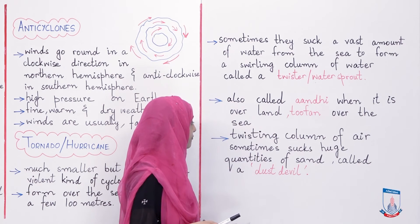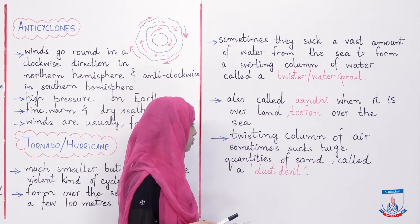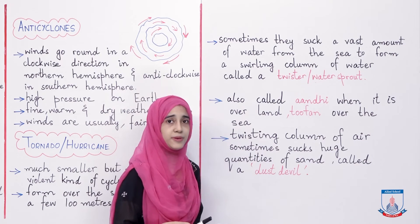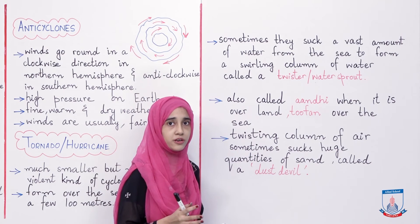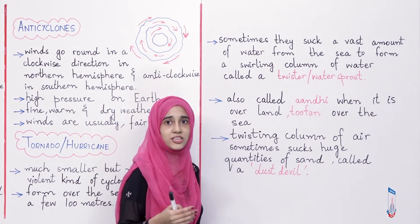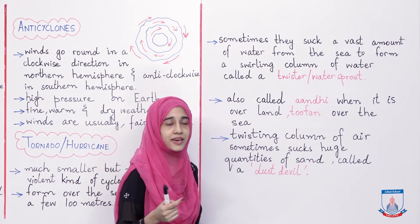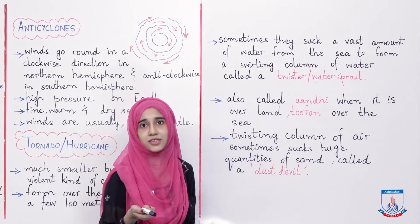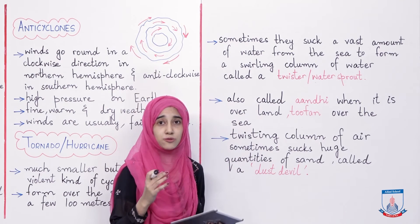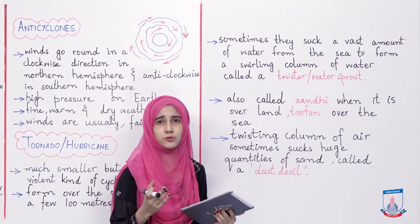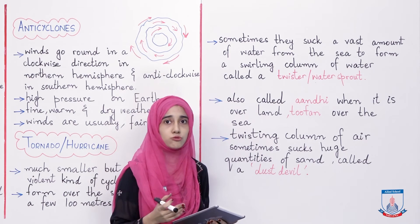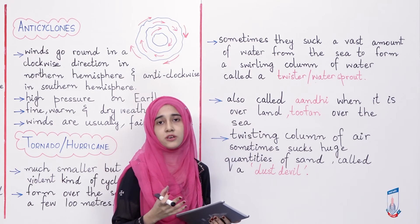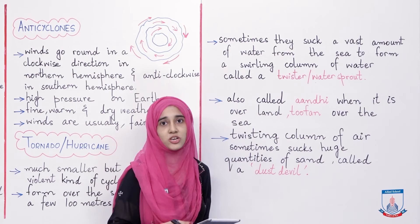A twisting column of air sometimes sucks huge quantities of sand — kabhi kabhi aise bhi hota hai ki a twisting column of air ek bada amount of sand ko saath le jaata hai, usse swirl kerta hai — and that whole process is called a dust devil. Usko dust devil kaha jaata hai kyunki woh ek pura swirling sand ka tornado banta hai jo har taraf tabaahi macha dayta hai.